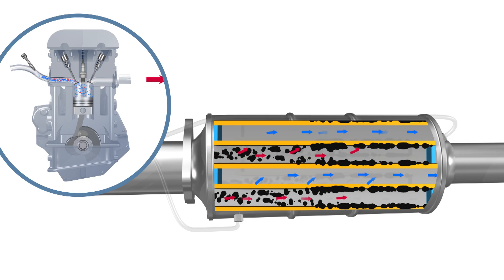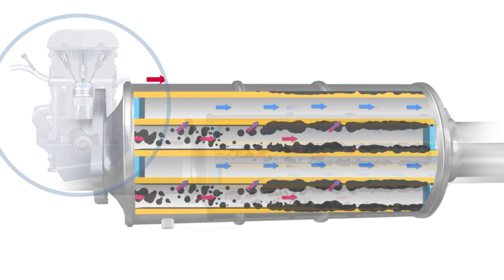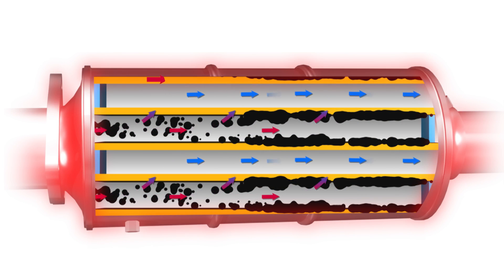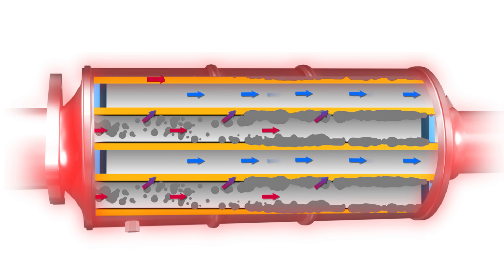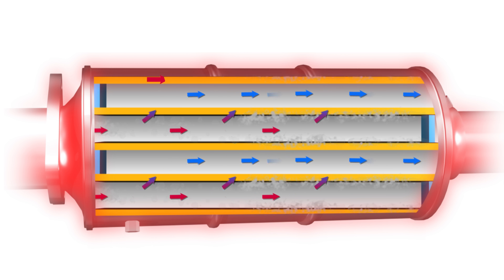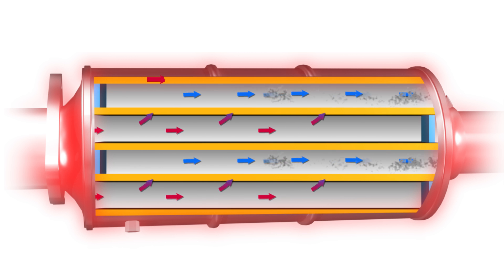The soot particles accumulate in the channels of the DPF and are burned off at regular intervals through a process called regeneration. This prevents the DPF from clogging.